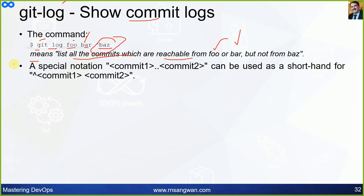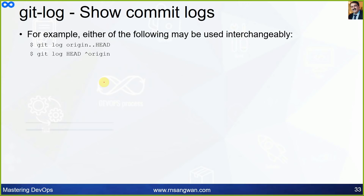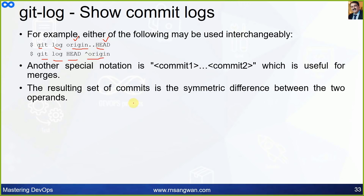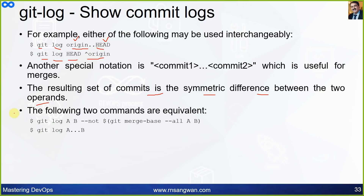A special notation: 'commit1..commit2' is shorthand for excluding commit1 and showing commit2. For example, 'git log origin..HEAD' means display HEAD but not origin. Another notation is triple-dot '...' — useful for merges — which gives the symmetric difference between two operands. 'git log A...B' is equivalent to 'git log A B --not $(git merge-base --all A B)'.